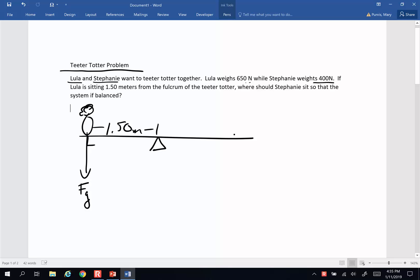Now before I draw the picture, let's think this through a little bit. Stephanie weighs a little bit less than Lula, she's only 400 newtons. And so in order to make the pivots balanced, to make the torques balanced, is she going to be less than 1.5 meters, at 1.5 meters, or more than 1.5 meters?